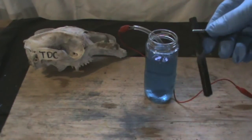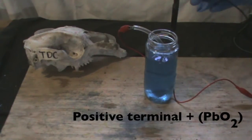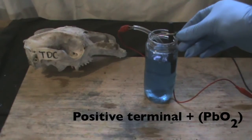Next, get the lead dioxide electrode and clip it onto the positive terminal of the power supply. This is the anode.